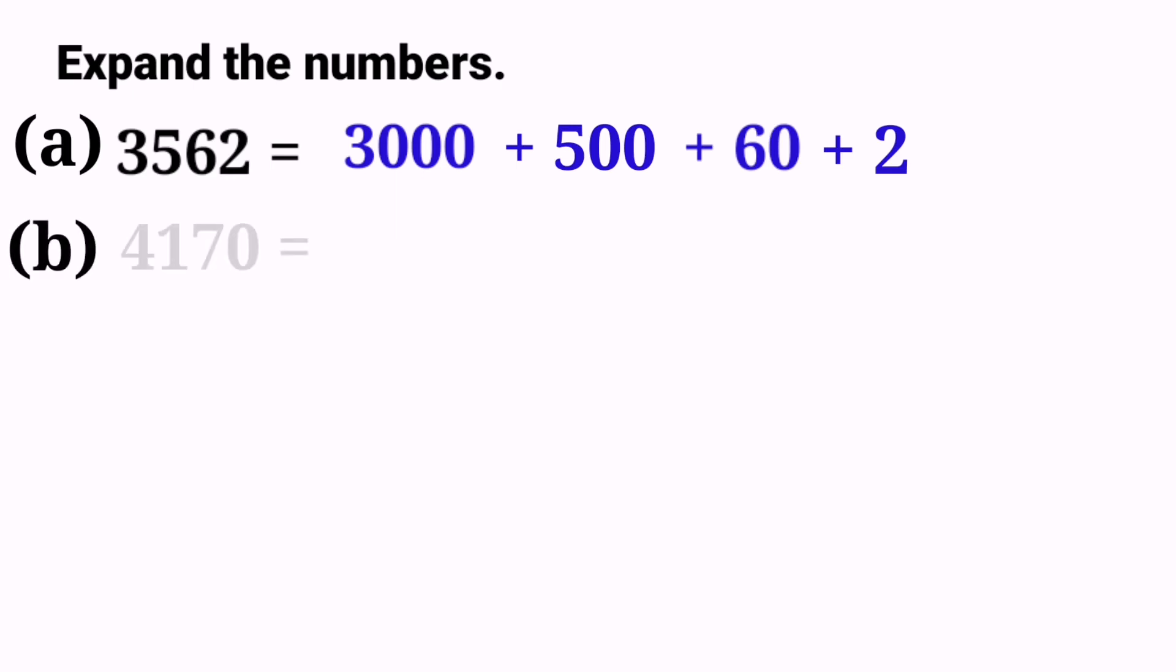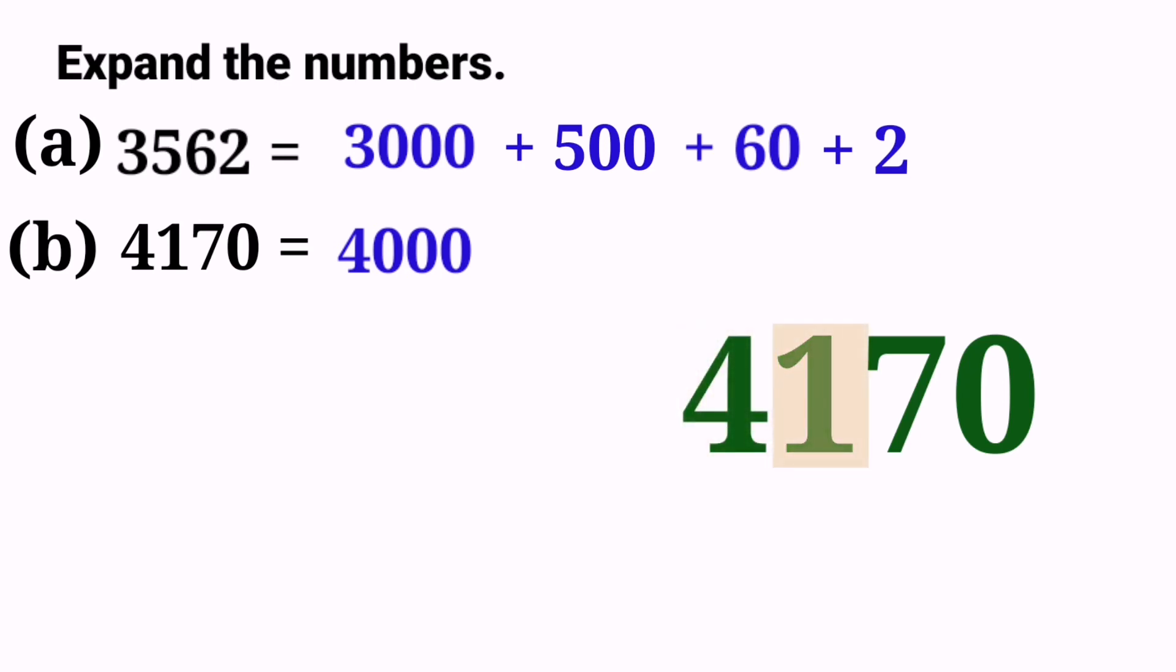Now we move to part B. Here we had 4,170. From this 4-digit number, we had to know the value of them. We start from 4, which is in 1,000s column, means 4 is 4,000. Next number is 1 in 100s column, and the value is 100. Next number is 7 in 10s column, and it is 70. And the last number is 0 in 1s column. 0 is nothing, so we don't need to write anything here.